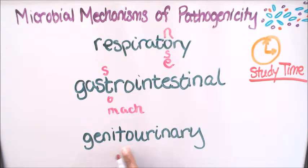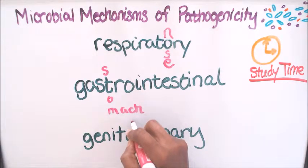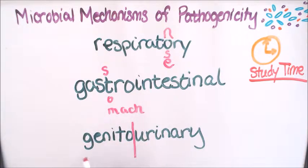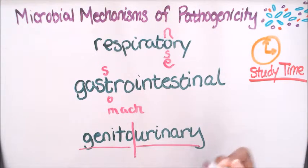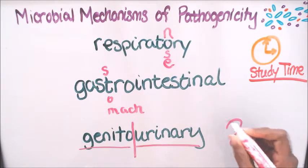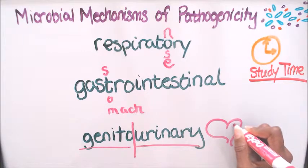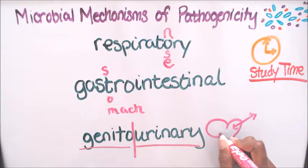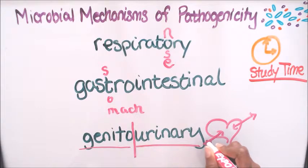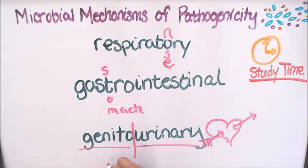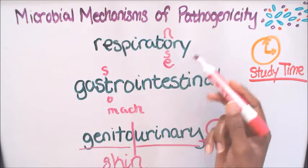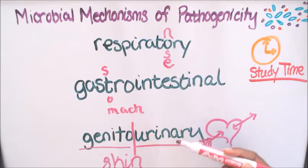Next we have the genitourinary tract — we're going to split that into genital and urinary, which of course involves sexual contact. And the last one is skin, which is the largest part of the body. So to summarize, we have: respiratory, gastrointestinal, genital, urinary tract, and the skin.